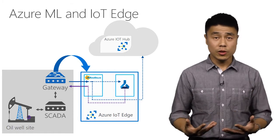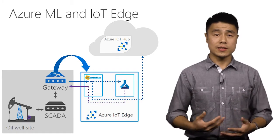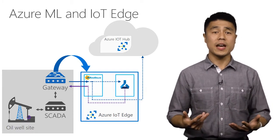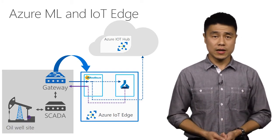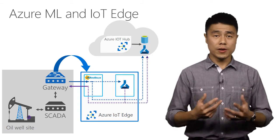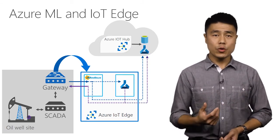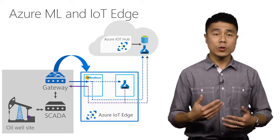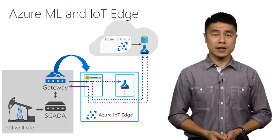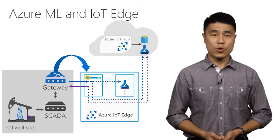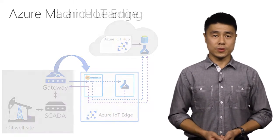If there's an alert, the SCADA system can even send out an email or text if there's connectivity. The output of the ML model and the data from the equipment can also be sent back to the cloud for storage and to train more accurate models.